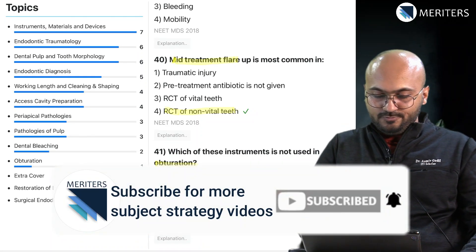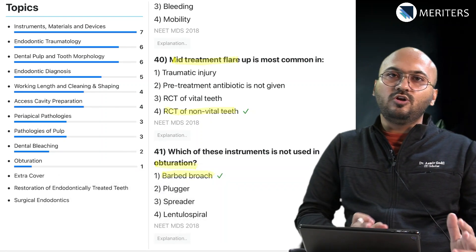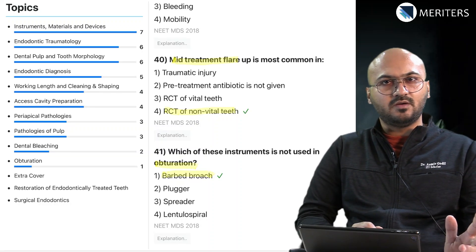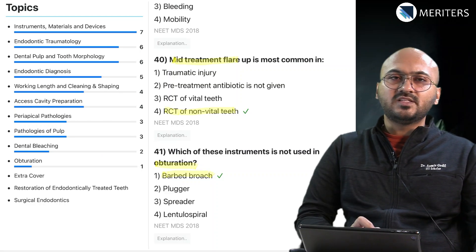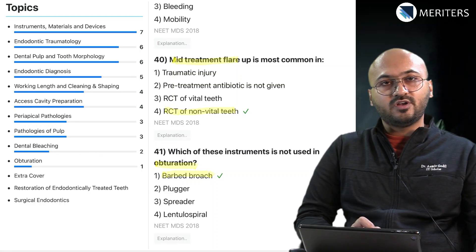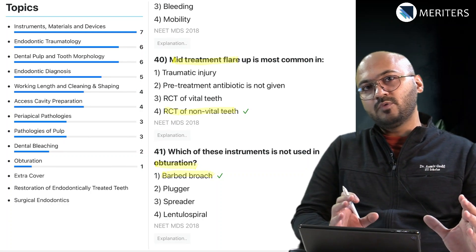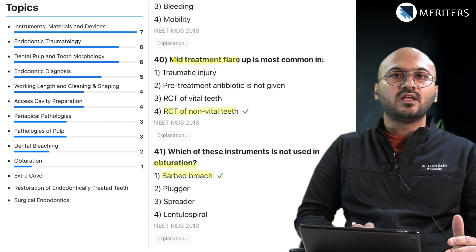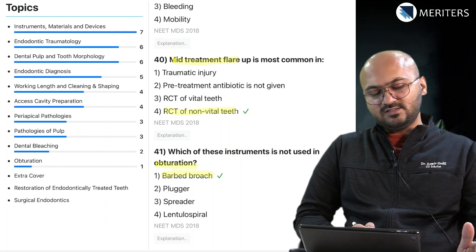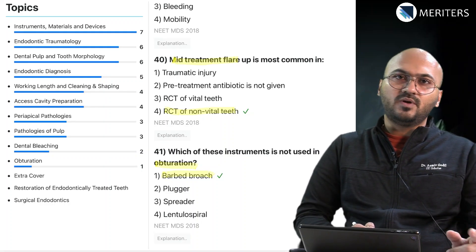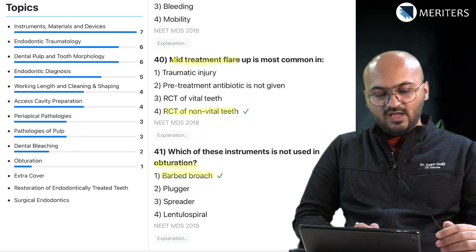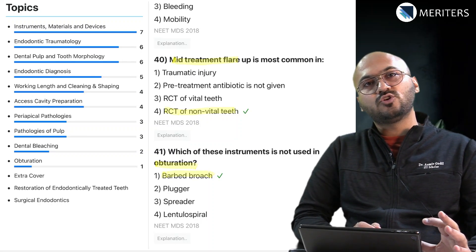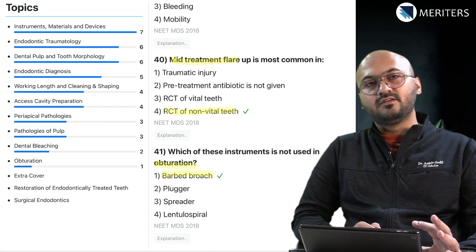In short, all endo topics are more or less important. Pulp and periapical pathologies together sum up to six to seven average questions in past exams. Instruments and materials are important, trauma is important, diagnosis is important, access cavity is important. Endo has a limited number of topics but they are all important. There have been fewer or no questions from surgical endodontics and post-and-core in recent years — relatively less important, but don't completely neglect those topics.